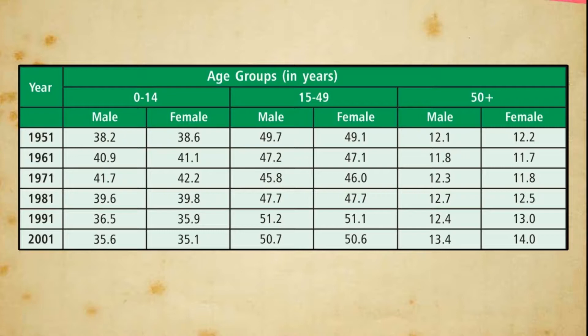In developed and rich countries, the number of old people is greater. When the population comprises more elderly, there may be a shortage of people working in productive work. As a result, the government has to make arrangements to sustain their life with good health care. India lies between low and middle income country categories.